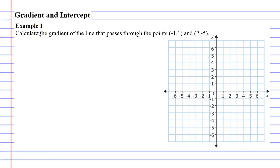Example 1, calculate the gradient of the line that passes through the points (-1, 1) and (2, -5).